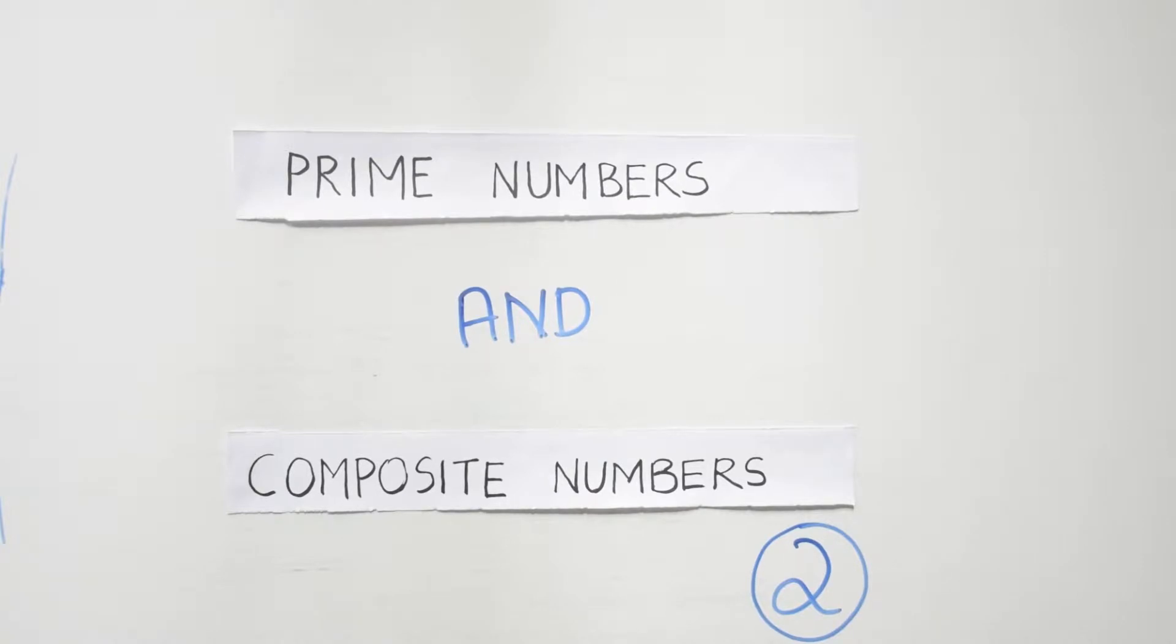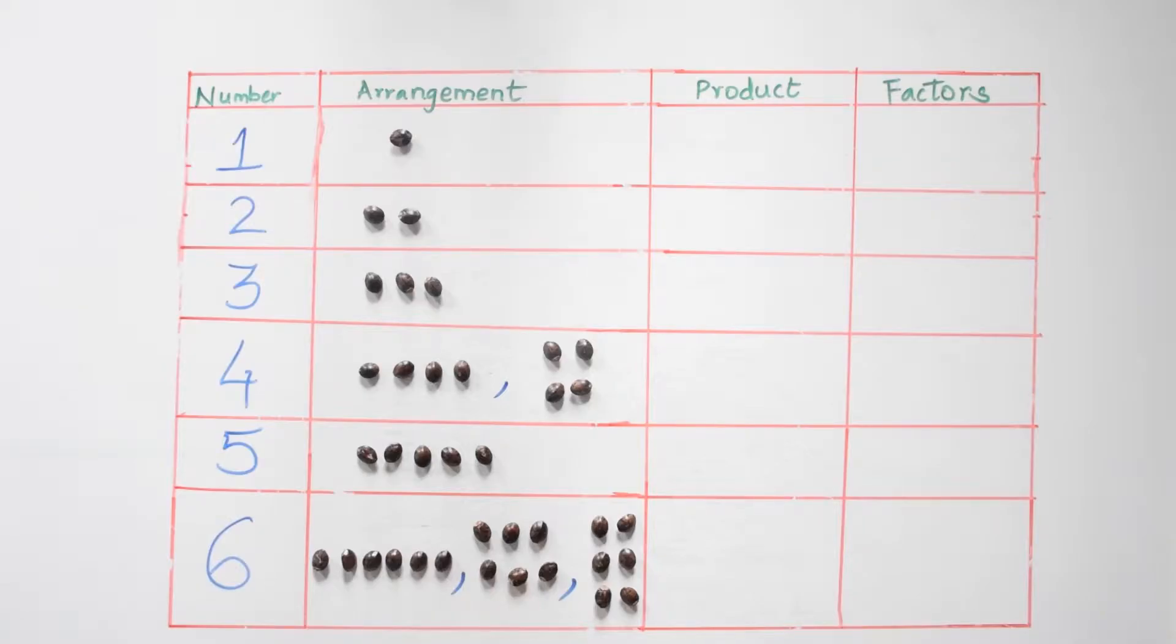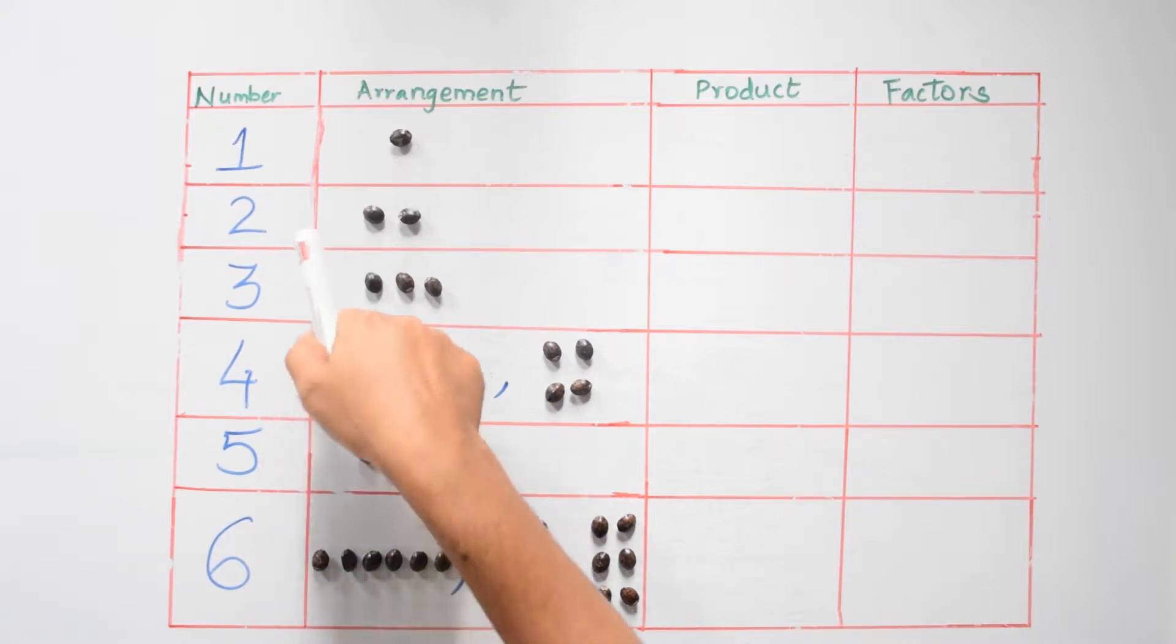Let's start from where we left in the previous video. We took the numbers one to six and looked at ways of arranging them. Now let's find the factors. One has one row times one column.